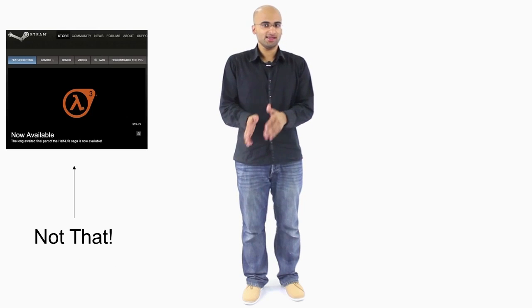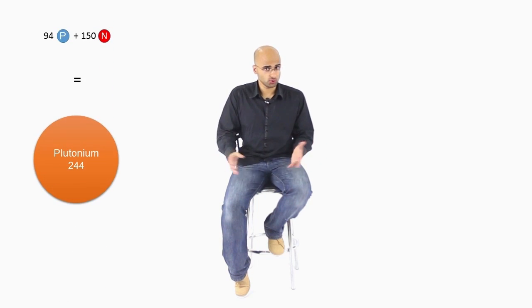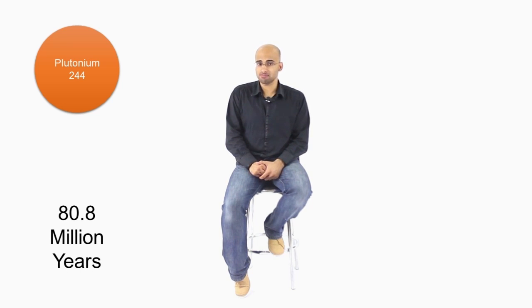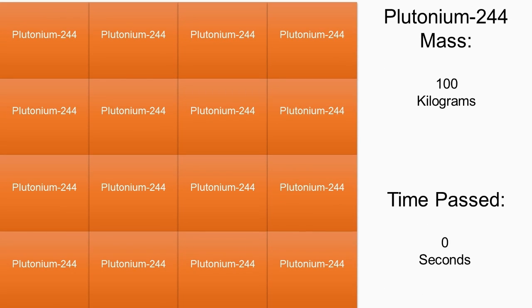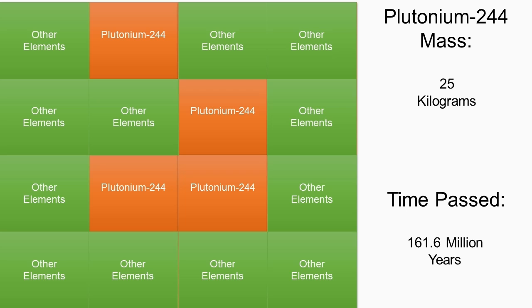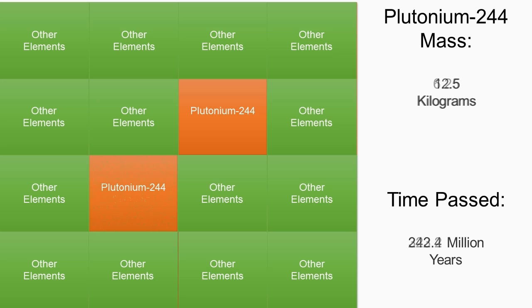Now, what does half-life mean? A half-life doesn't mean that an element will disappear in nine hours. A half-life, in basic terms, is the amount of time for half of an element to decay into something else. Let's take the isotope plutonium-244. Let's say you had 100 kilograms of plutonium-244. Plutonium-244 has a half-life of 80.8 million years — meaning that after 80.8 million years, half of that chunk would have decayed into something else. Wait another 80.8 million years, half of that decays. And so on and so forth.